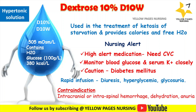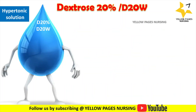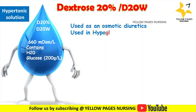Another hypertonic solution is Dextrose 20%, with an osmolarity of 660 milli-osmol per liter, containing water and glucose 200 grams per liter. It is used as an osmotic diuretic that causes fluid shifts between various fluid compartments to promote diuresis. It is also used in cases of hypoglycemia. Dextrose is also available in other concentrations such as 25% and 50% in water.